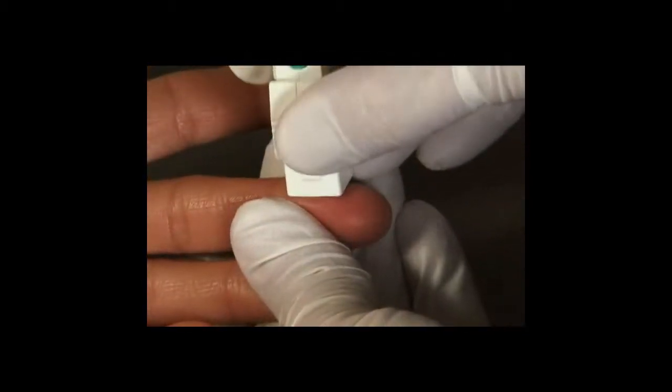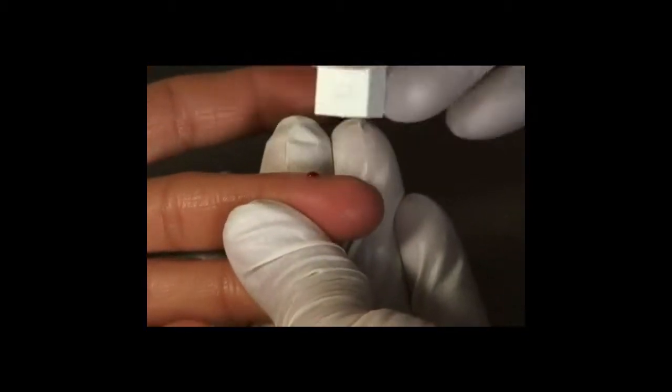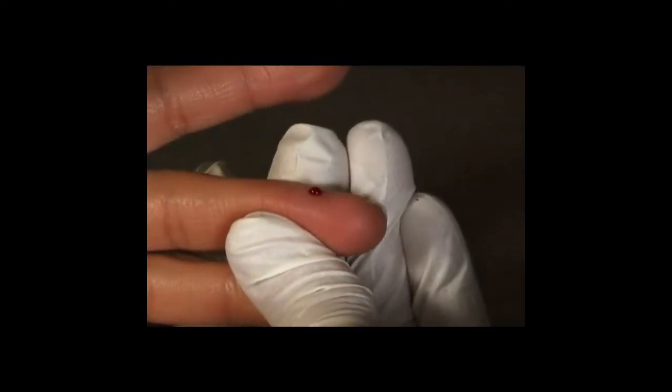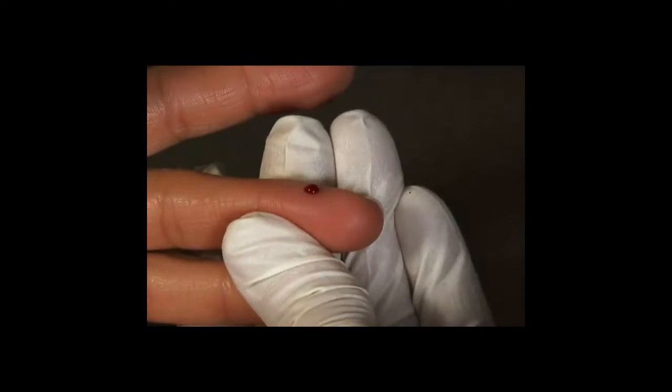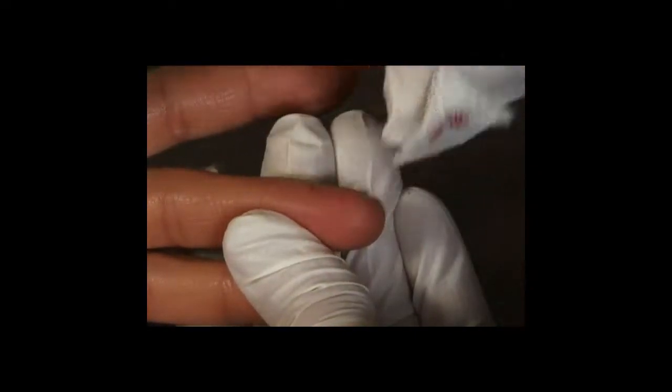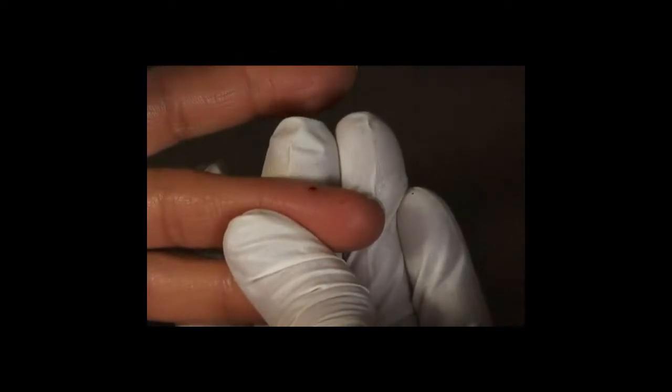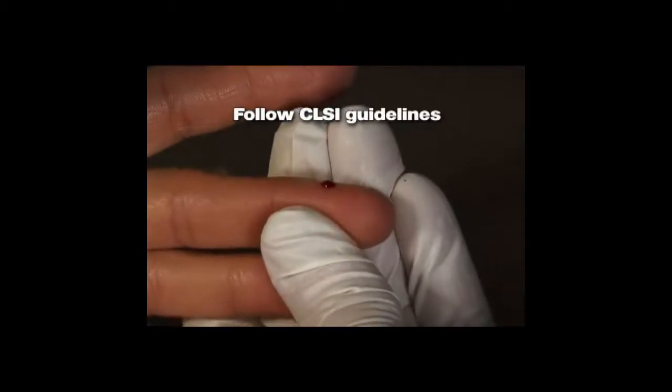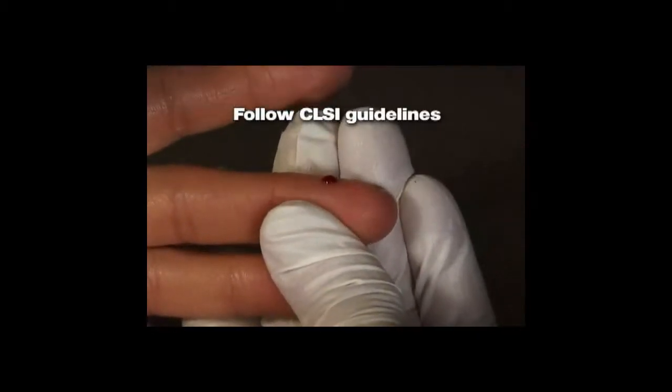Press lightly on the fingertip and puncture with a suitable sampling device on the side of the fingertip. Sticking the fingertip on the side is less painful and the blood flow is better. To ensure that there will be a spontaneous flow of blood, use a sampling device with a proper depth size. The recommended sampling depth size is 2.25 millimeters. Blot away the first drop of blood. Then, if necessary, press gently once again to get a drop of blood which is large enough to fill the micro-cuvette completely. Avoid milking.